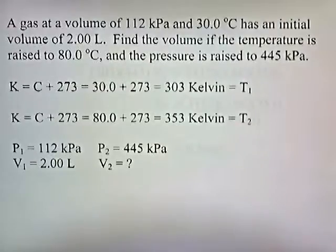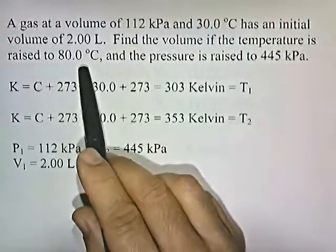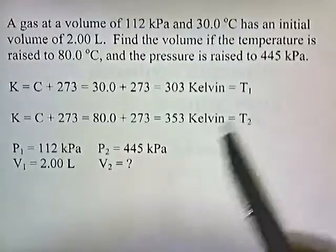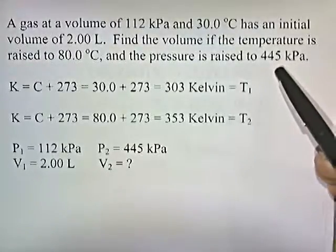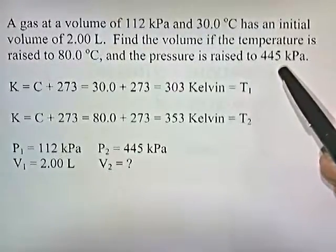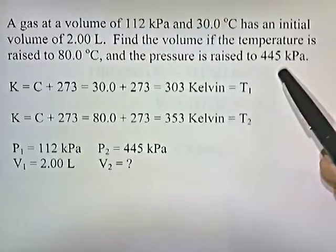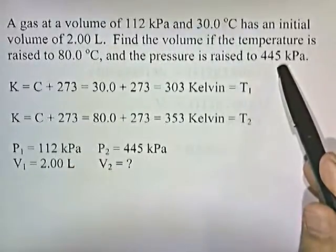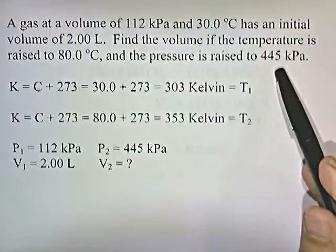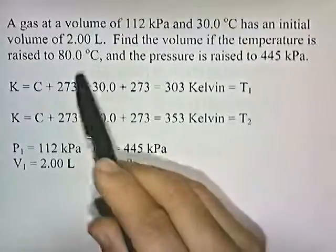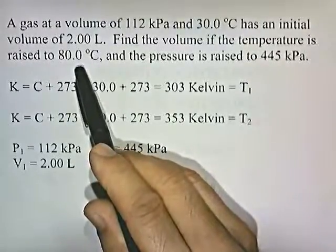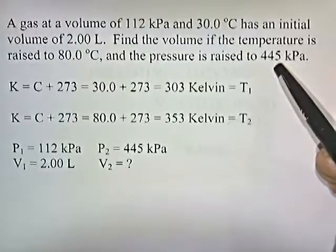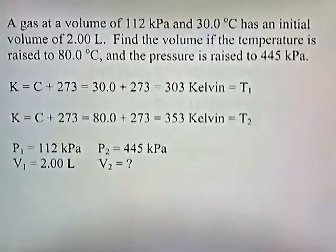We're changing two things: we're increasing the temperature, which would cause the volume to increase, and we're raising the pressure, compressing the gas, which would cause the volume to decrease. So we have two conflicting factors — temperature increasing would increase the volume, and pressure increasing would decrease the volume.